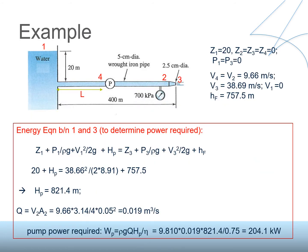Now we calculate the head required by the pump by applying the energy equation between points 1 and 3. These points are chosen because much information is known: z1 = 20 m, z3 = 0 m, p1 = p3 = 0 (both at atmosphere), and V1 and V3 are known.